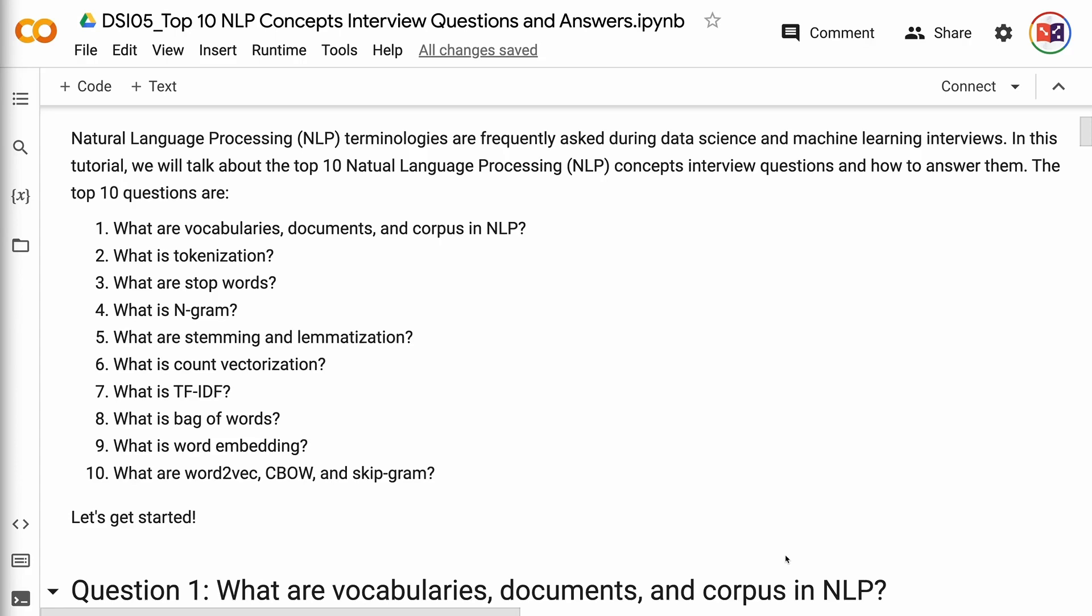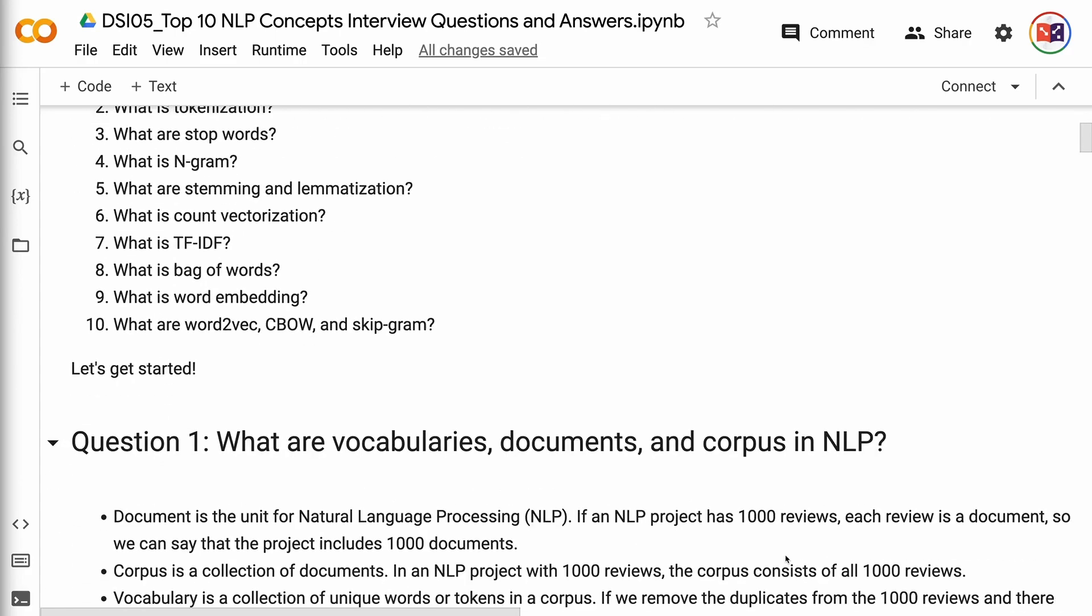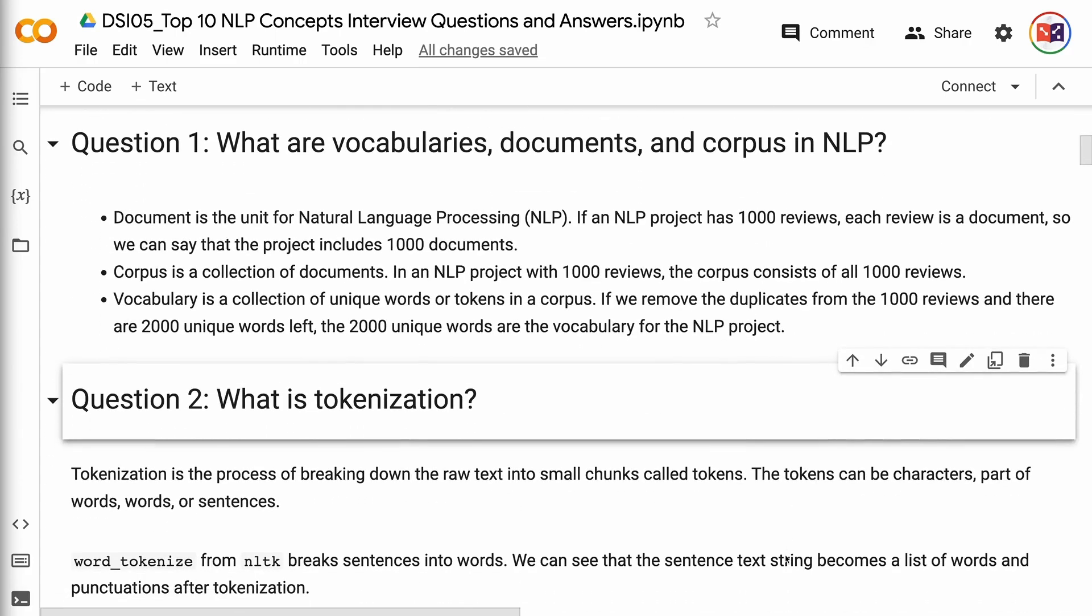Question 1: What are vocabularies, documents, and corpus in NLP? Document is the unit for natural language processing. If an NLP project has 1,000 reviews, each review is a document, so we can say that the project includes 1,000 documents. Corpus is a collection of documents. In an NLP project with 1,000 reviews, the corpus consists of all 1,000 reviews. Vocabulary is a collection of unique words or tokens in a corpus. If we remove the duplicates from the 1,000 reviews and there are 2,000 unique words left, the 2,000 unique words are the vocabulary for the NLP project.